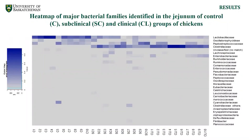We plotted major bacterial families identified in the jejunum of the control, subclinical, and clinical groups. We were able to detect 256 different species of bacteria and greater than 20 major bacterial families. Lactobacillaceae and Oscillospiraceae were high in control birds and decreased in necrotic enteritis affected birds. Similarly, Clostridiaceae and Enterobacteriaceae were high in necrotic enteritis challenged birds and very low in control birds.